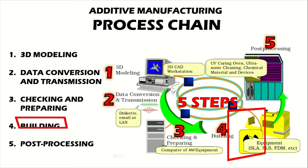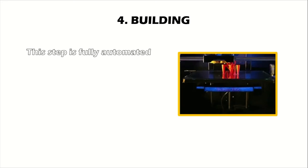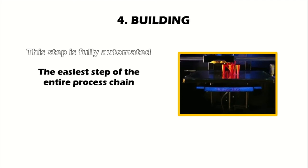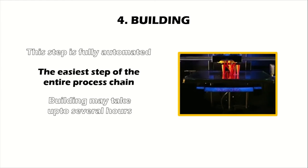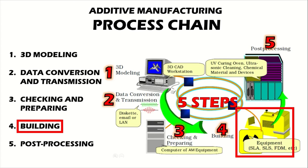The fourth step is building the model. For most additive manufacturing systems, this step is fully automated, so it is usual for operators to leave the machine to build a part overnight. This is the easiest step of the entire process chain — we just need to make sure that the input raw material is enough to build the entire model. The building process may take up to several hours, depending on the size and number of parts required. The number of identical parts that can be built is subject to the overall build volume of the additive manufacturing system.